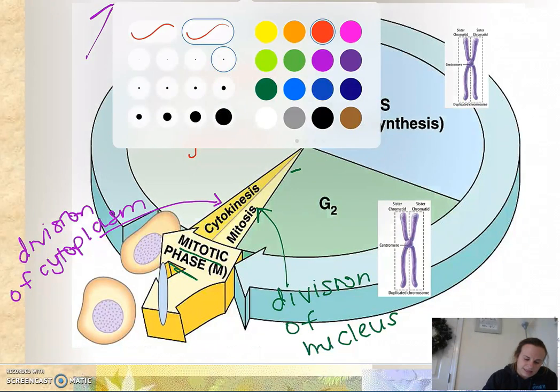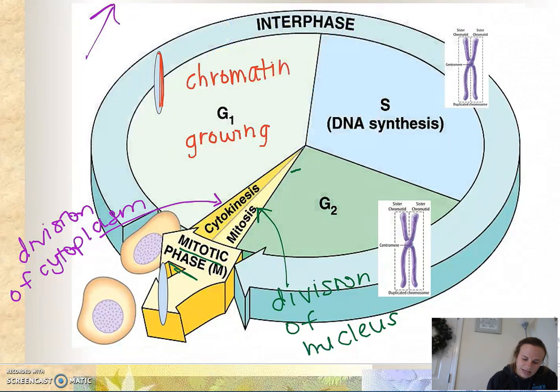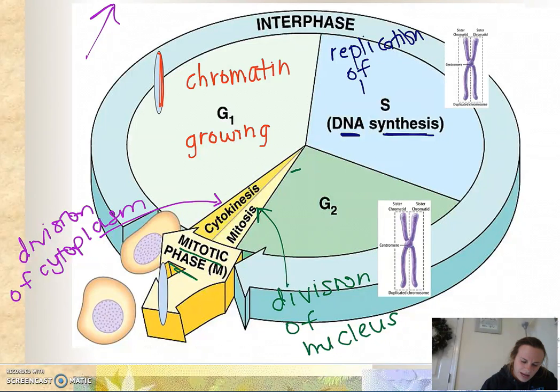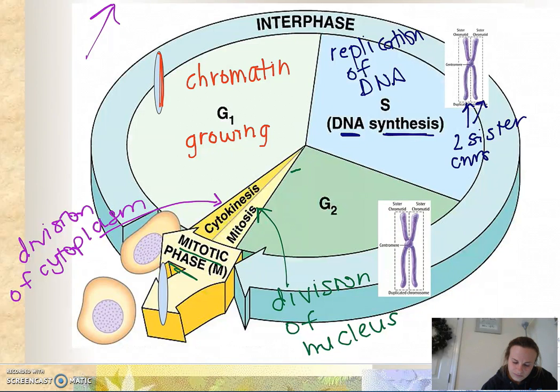In our synthesis phase, in S phase, DNA is being replicated. So this is the replication of DNA. What ends up happening is our chromatin gets replicated and now what I've got are two sister chromatids, which is also referred to as one chromosome.